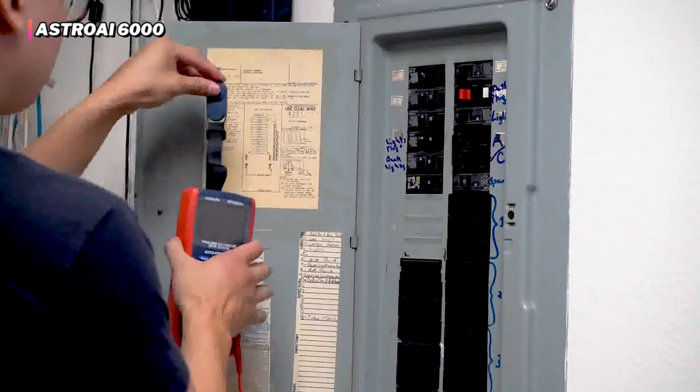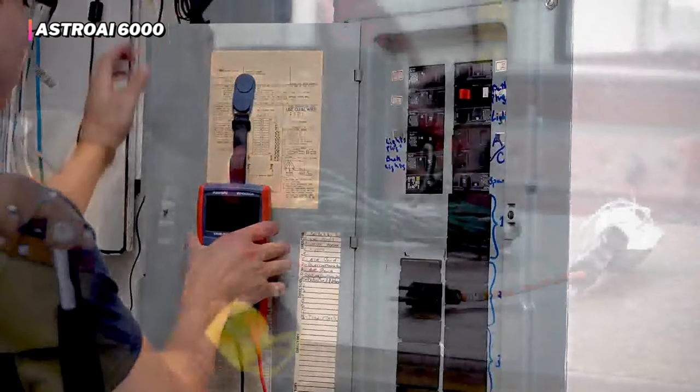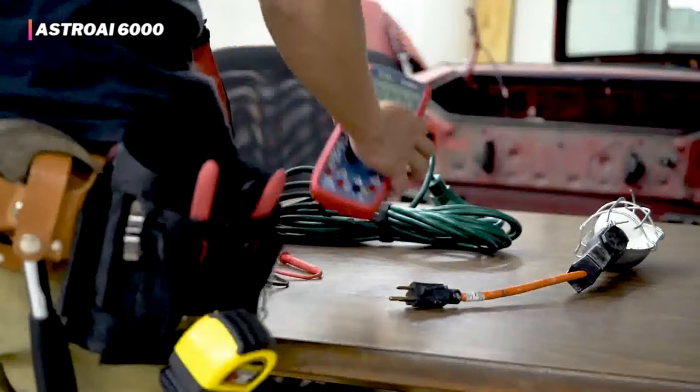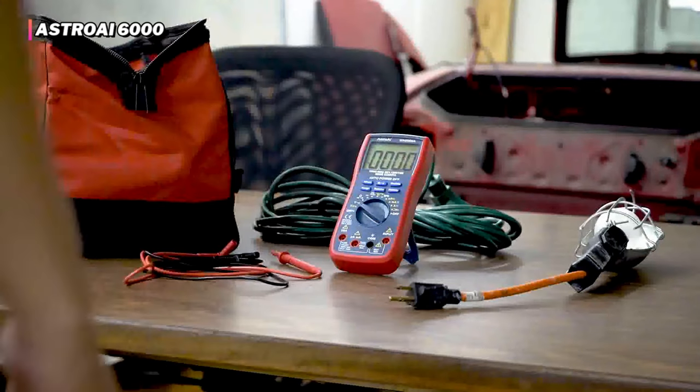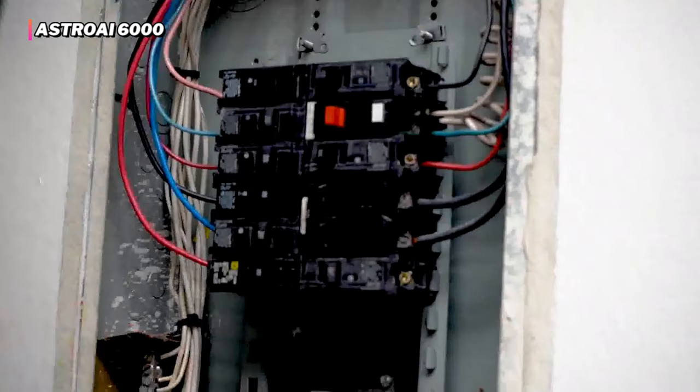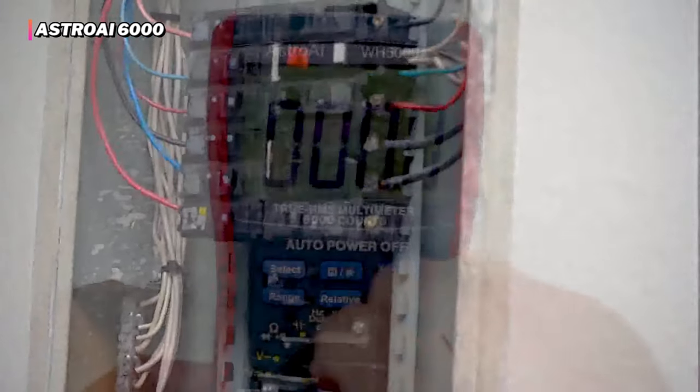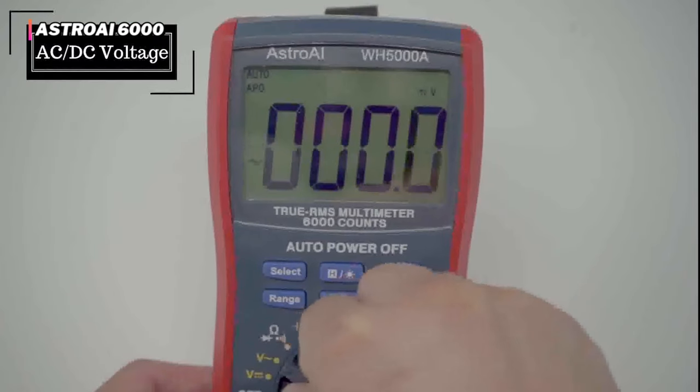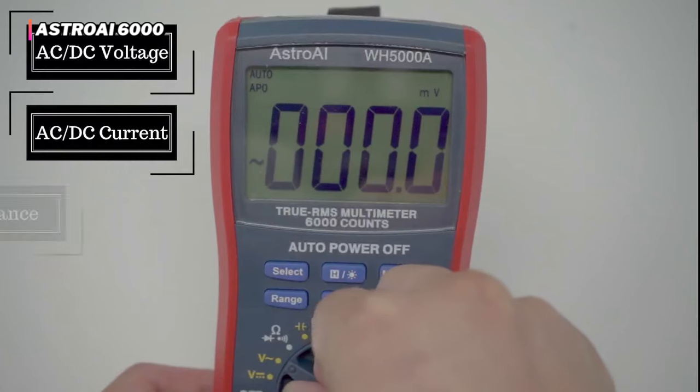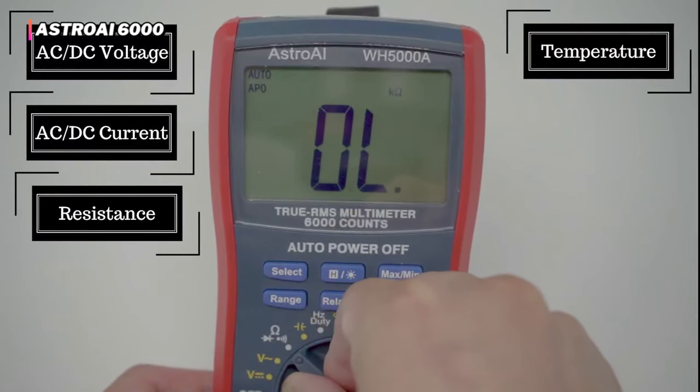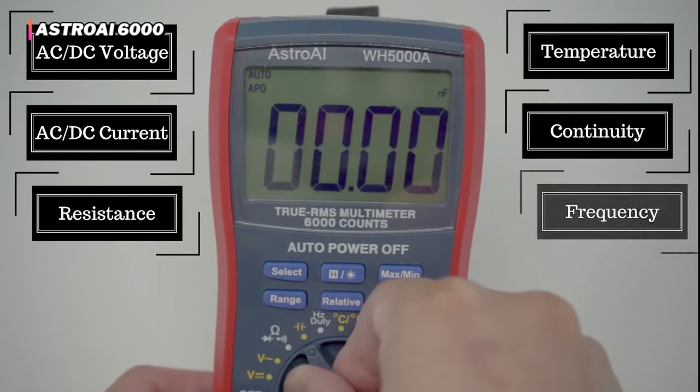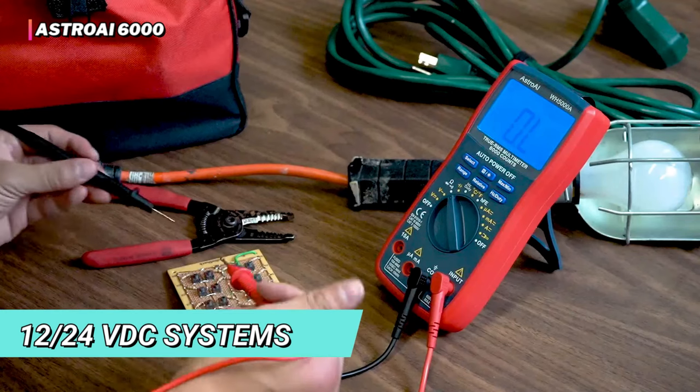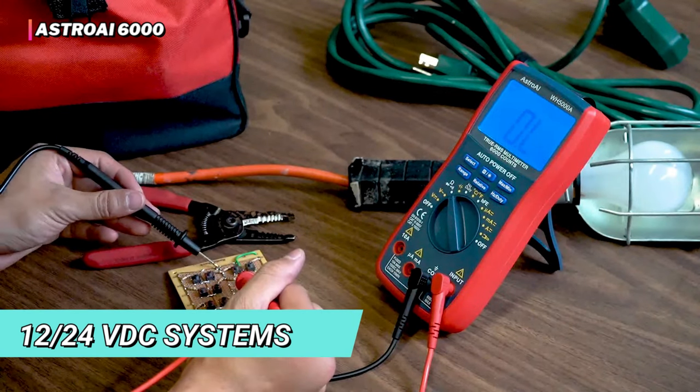This meter has plenty of additional functionality, allowing you to check components like transistors, diodes, resistors, and capacitors, along with measuring temperatures using the thermocouple. The Astro AI 6000 is an excellent option for DIY electronic projects, household wiring repair, or working on 12 by 24 VDC systems found on cars and boats.